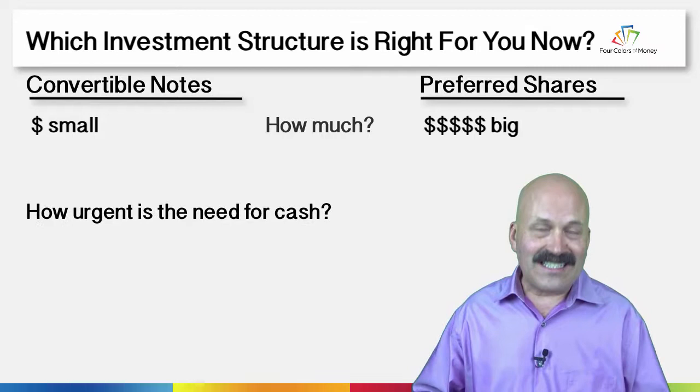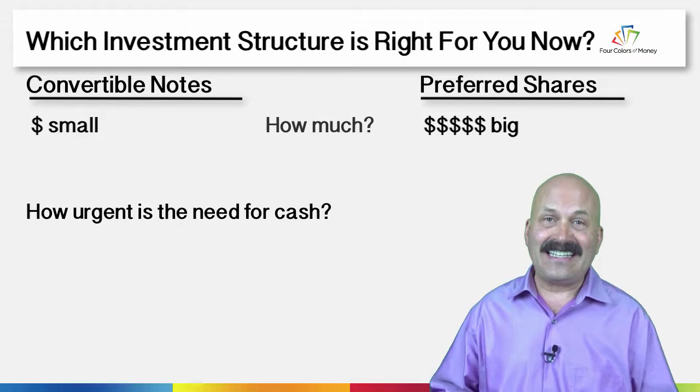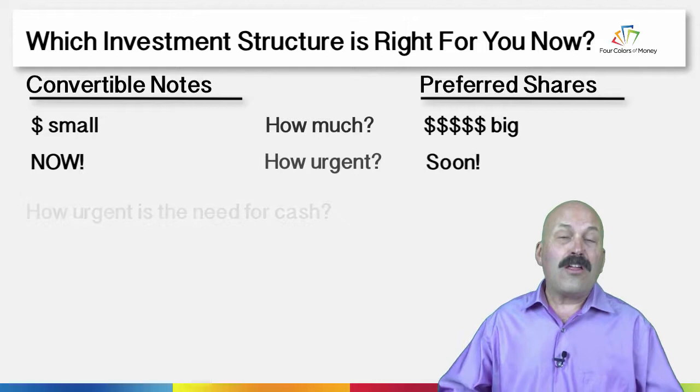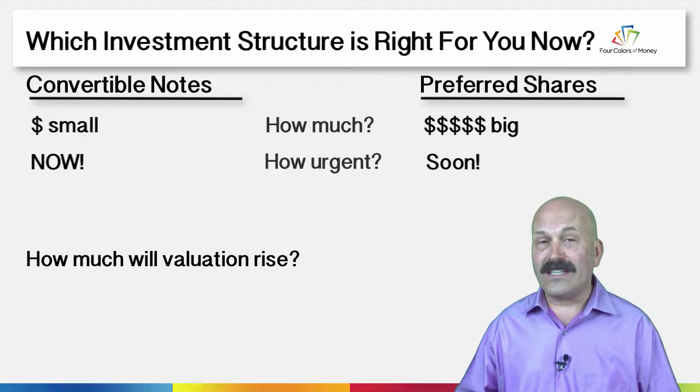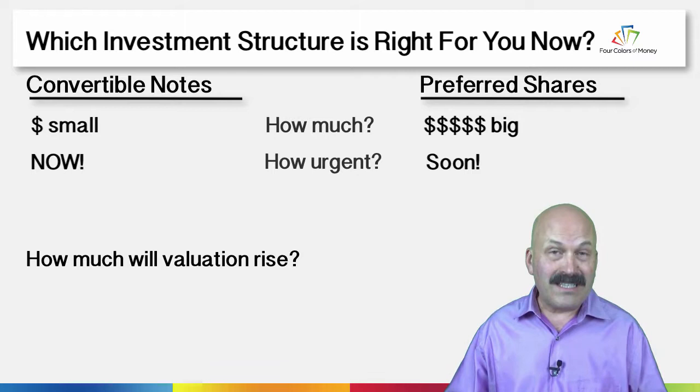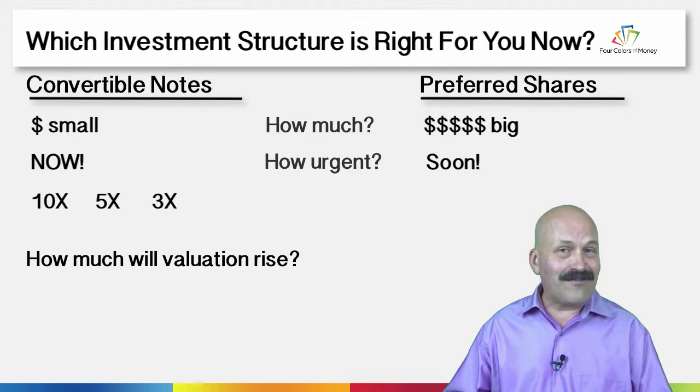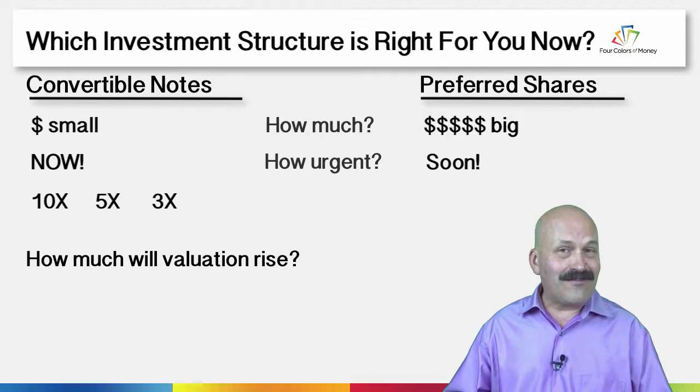Second, how urgent is the need for cash? If you really need it in the next 60 to 90 days, convertibles or some of the alternatives are really the way to go. Third, how much do you think your valuation is going to increase over the next 12 months? If you think it has a possibility of going three to ten times, check your investment milestones and check comparable companies.